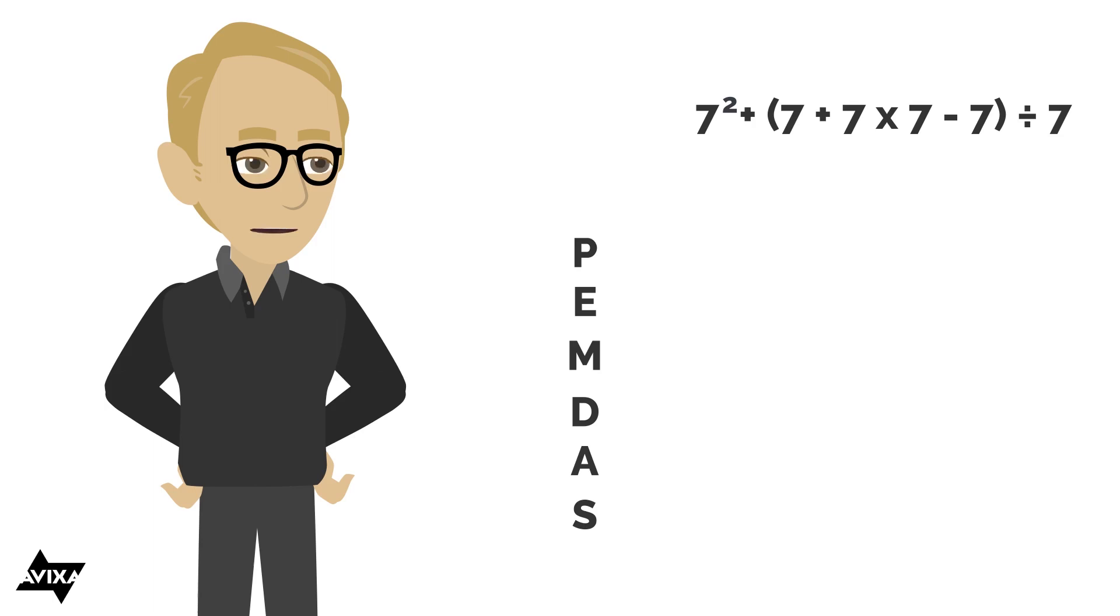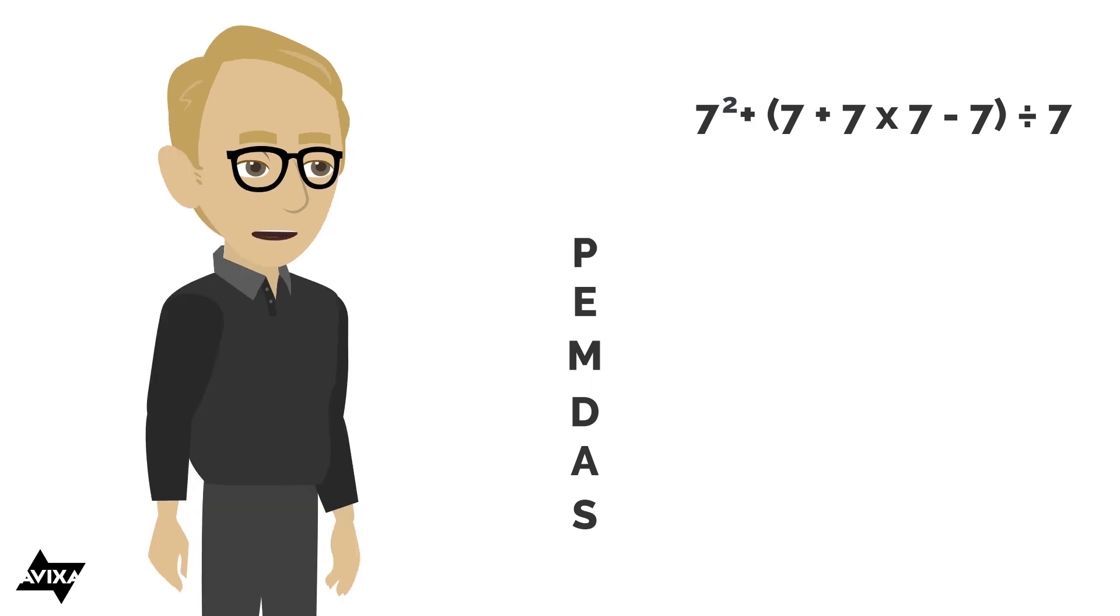So addition, multiplication, subtraction, which one do I do first? I do the multiplication following PEMDAS. So I'm going to do that seven times seven, and that's going to be 49.